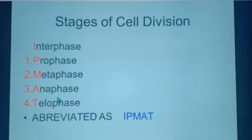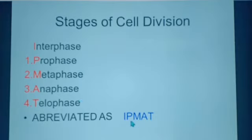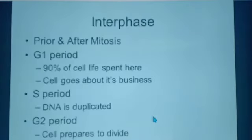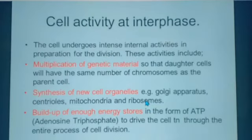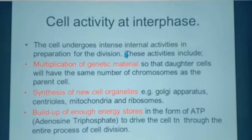We commonly abbreviate the five phases as IPMAT: I for interphase, P for prophase, M for metaphase, A for anaphase, and T for telophase. The interphase is just the stage in between one complete cycle and the subsequent ones. Let's look at what happens in each of these stages. During interphase, the cell prepares itself for the subsequent processes of division, and therefore we commonly call it a preparatory stage.